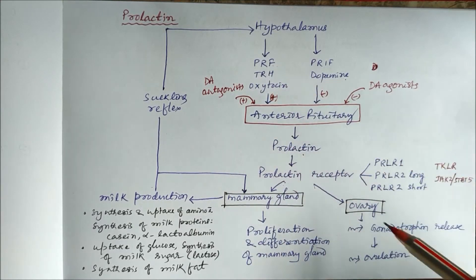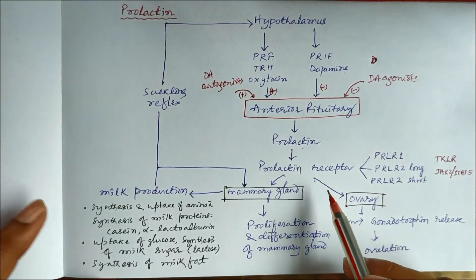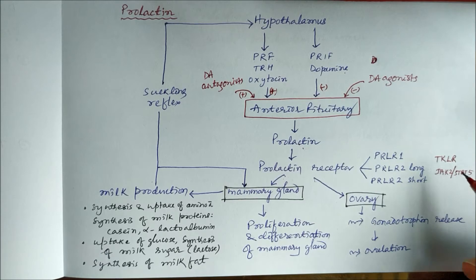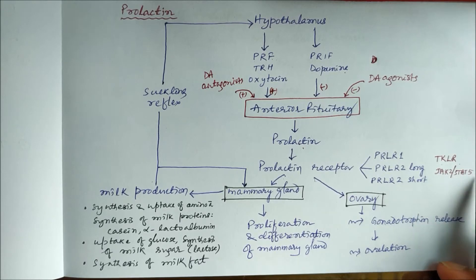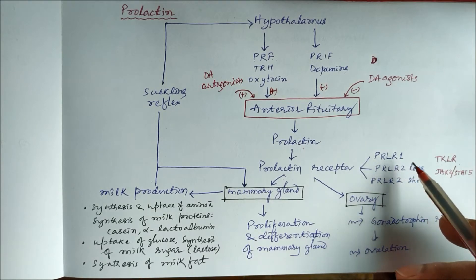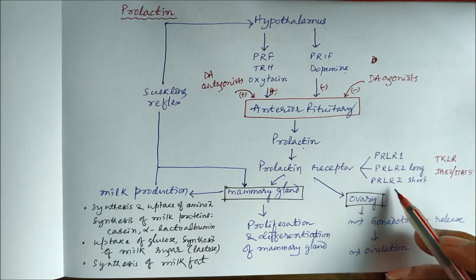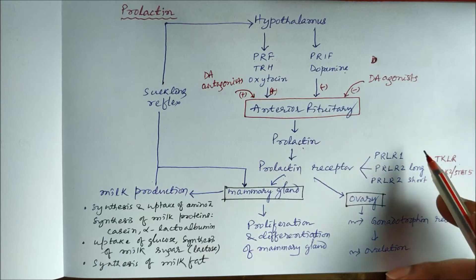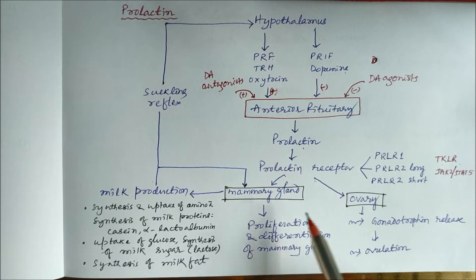Prolactin acts on the prolactin receptor, which is a tyrosine kinase-linked receptor following the JAK-STAT pathway — specifically JAK2 and STAT5 are involved. This receptor can be of three types: prolactin receptor 1, prolactin receptor 2 long, and prolactin receptor 2 short. These receptors are present in the mammary gland and ovary.